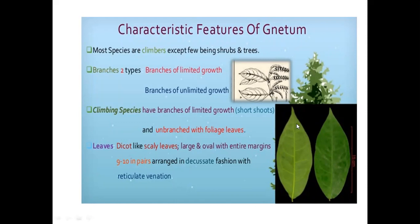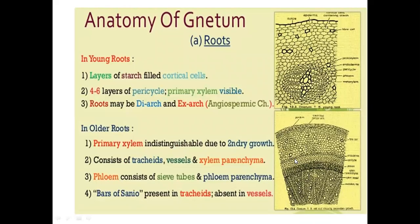These are the leaves of Natum. Anatomy of Natum root: in the young root, there is a layer of starch-filled cortical cells and 4 to 6 layers of pericycle. Root may be diarch and exarch, an angiosperm-like character. In the older root, primary xylem is indistinguishable due to secondary growth; it consists of tracheids, vessels, and xylem parenchyma. Phloem consists of sieve tubes and phloem parenchyma. Bars of Sanio are present in tracheids but absent in vessels.